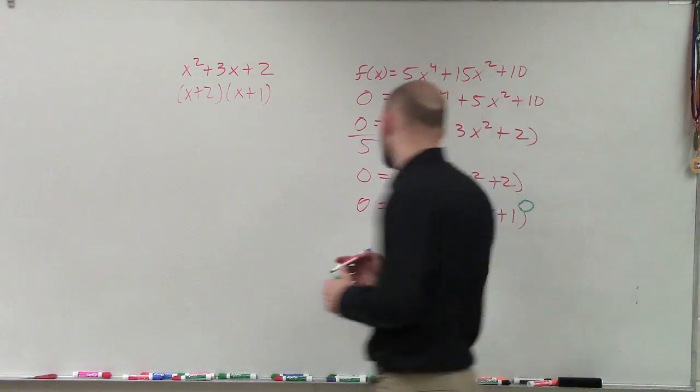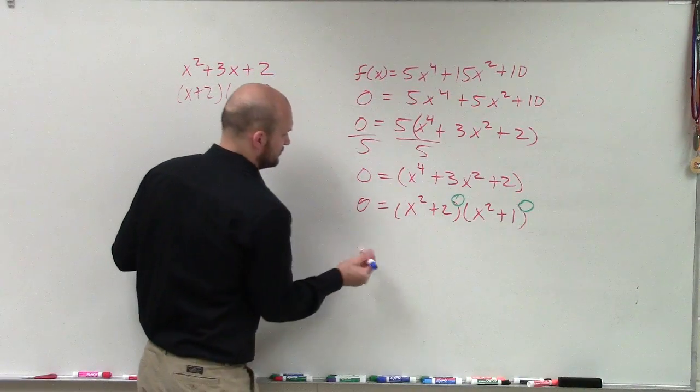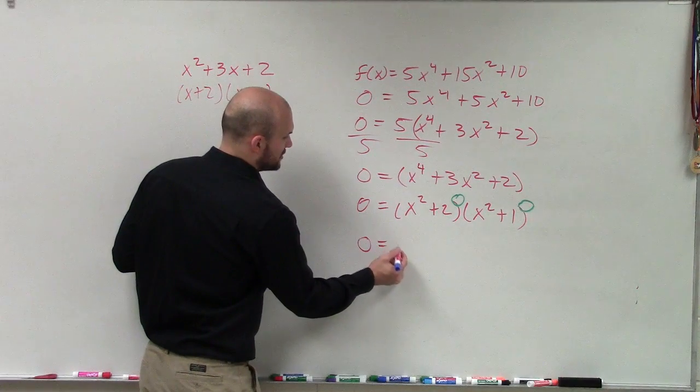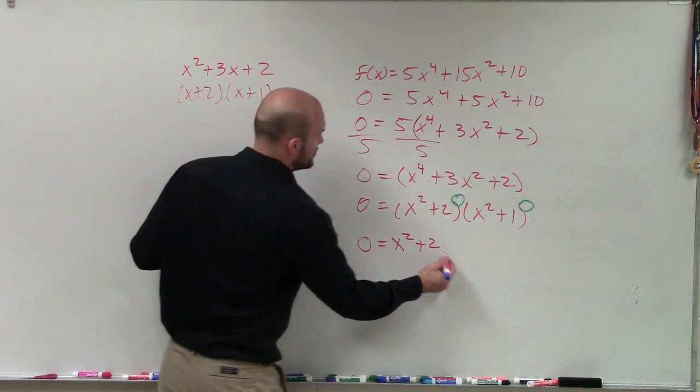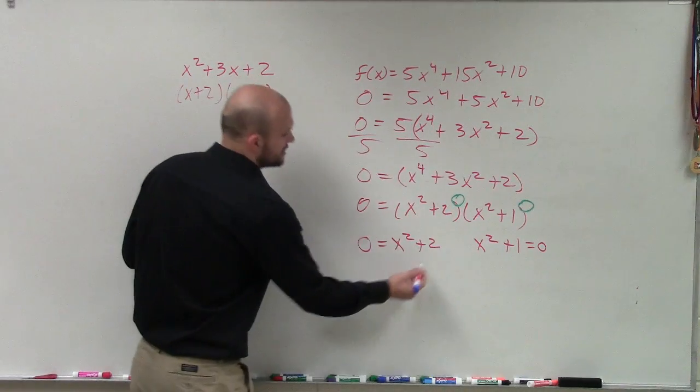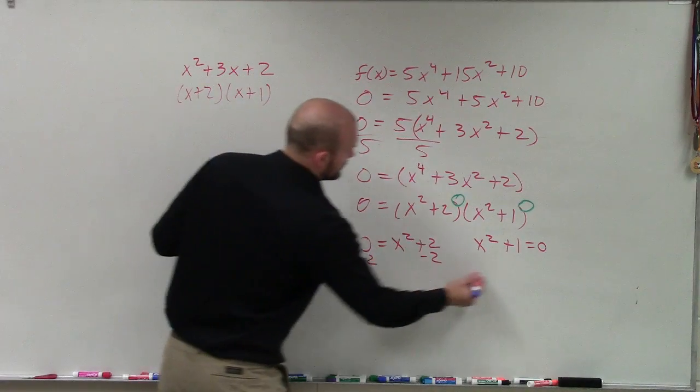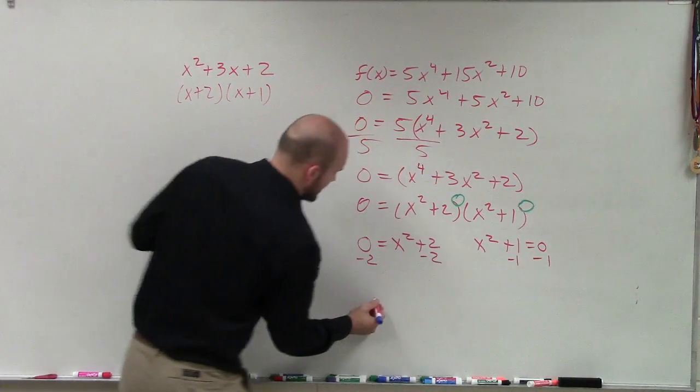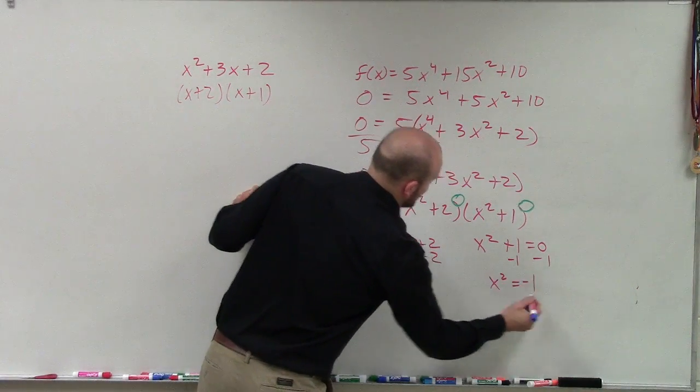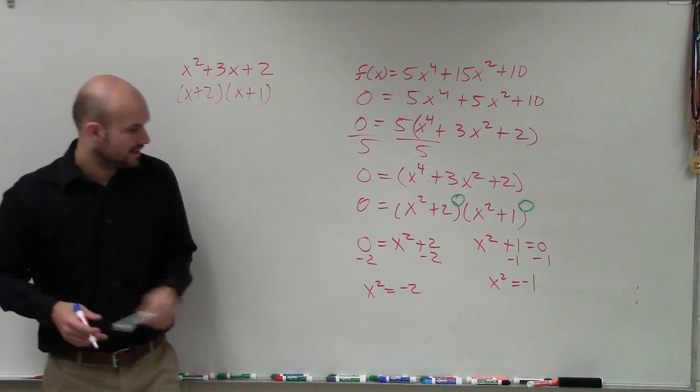But here we're going to come to an issue, though, because when we solve this, zero equals, now I set these both equal to zero: x squared plus 2, and x squared plus 1 equals zero. So now I solve, and what I have is x squared equals negative 2, x squared equals negative 1.